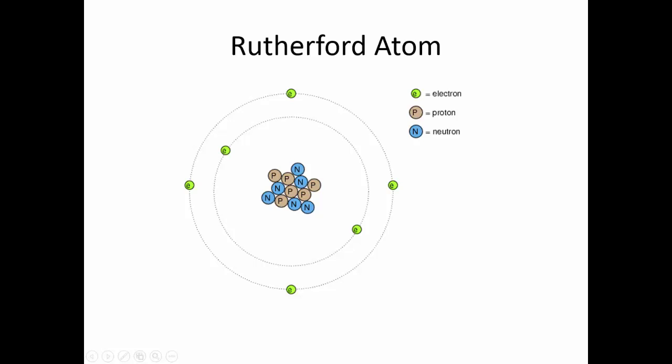The 6 protons tell us this is a carbon atom. Those 6 neutrons tell us this is a carbon-12 atom, the most common isotope of carbon. The 6 electrons match the 6 protons, making this a neutral carbon atom. Protons are positively charged, electrons are negatively charged, and equal numbers mean the charges cancel out.